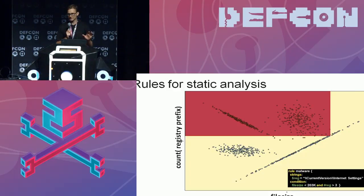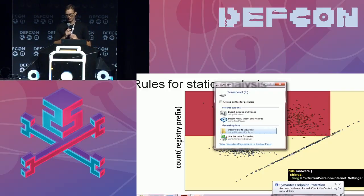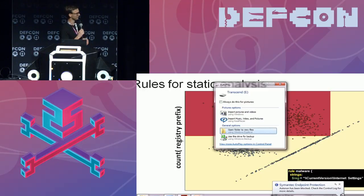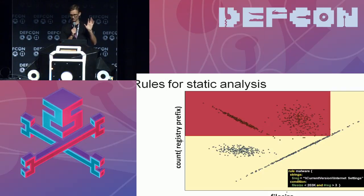To motivate this, let's first talk about rules and how one might write a rule to detect malware. On this little chart here, I've plotted a bunch of totally fictitious red dots and blue dots which are meant to represent files as described by first file size and second by the number of registry key strings contained in the file. I'm going to create by hand a YARA rule in that black box there that defines this region of the feature space — file size, number of strings — that cordons off all of the malware in my data set.